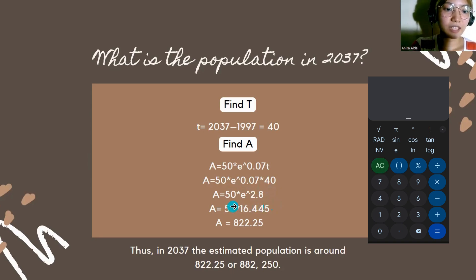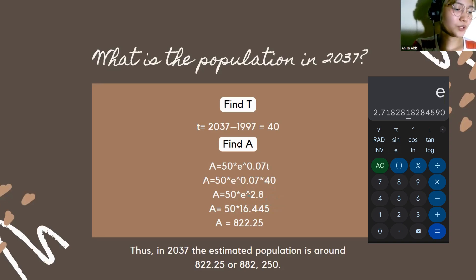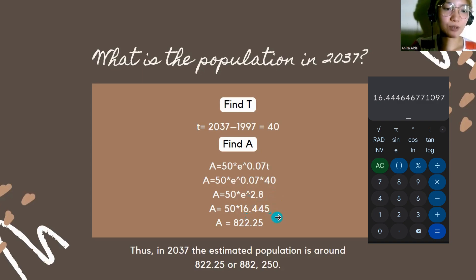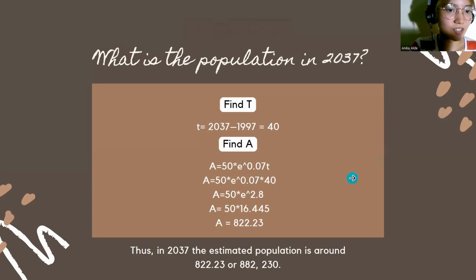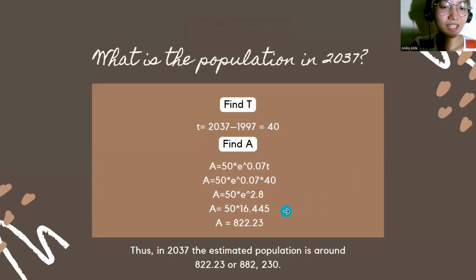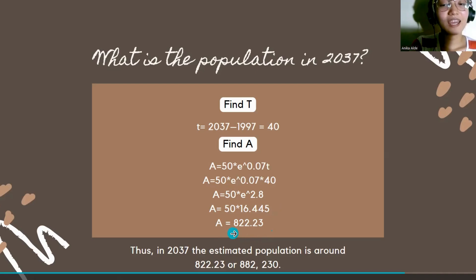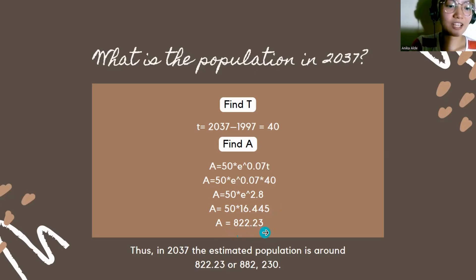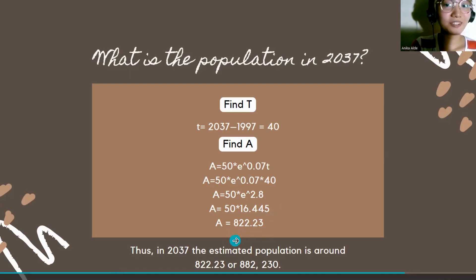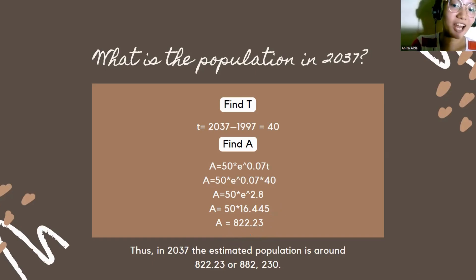So we have 50 times E raised to 2.8. Evaluating E raised to 2.8 gives approximately 16.445. Multiplying 50 times 16.445, the result is 822.23 thousand. Therefore, in 2037, the estimated population is around 822.23 thousand, or approximately 822,230.